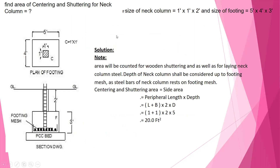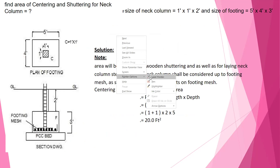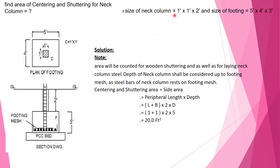For a neck column, how to calculate the neck column area. Neck column area is 1 foot by 1 foot; the size of the footing is 5 feet by 4 feet by 3 feet. Starting from the bottom, the shuttering area is equal to the peripheral length into depth. That means length plus breadth, hole multiplied by 2, into depth — that is 1 plus 1 into 2 into 5 — that is 20 square feet of neck column shuttering area.